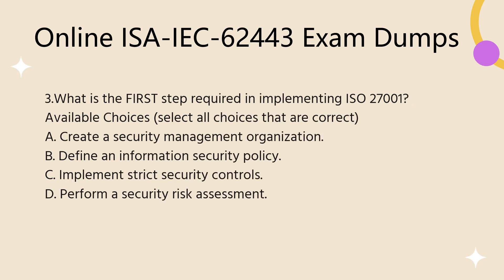Question 3. What is the first step required in implementing ISO 27001? Select all choices that are correct. A. Create a security management organization. B. Define an information security policy. C. Implement strict security controls. D. Perform a security risk assessment.